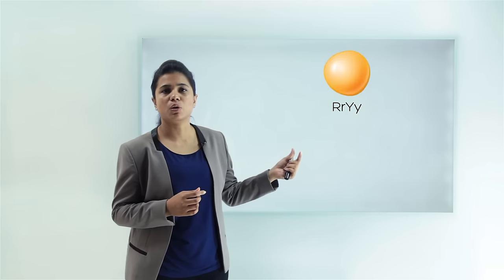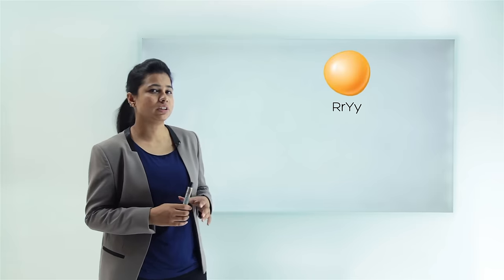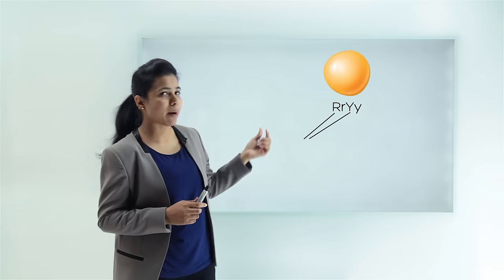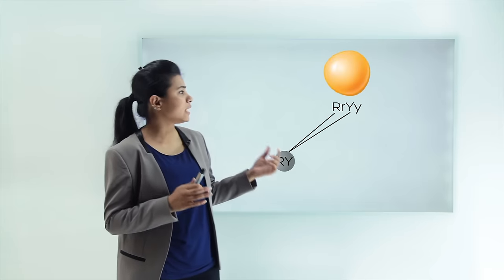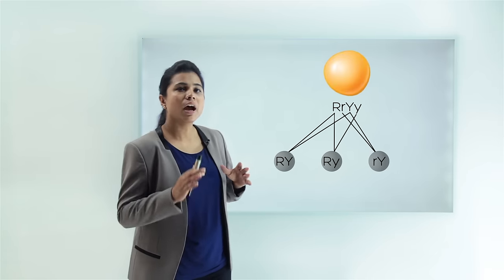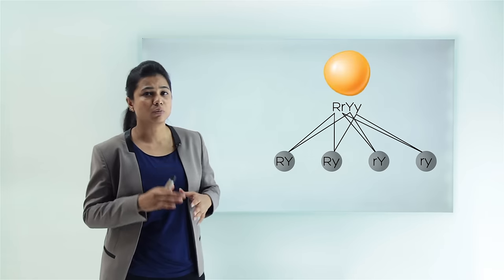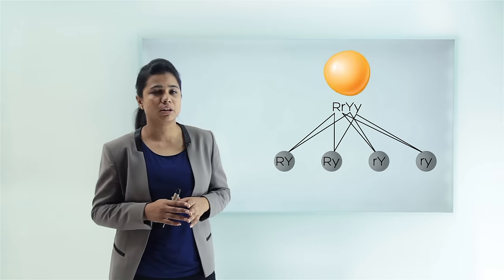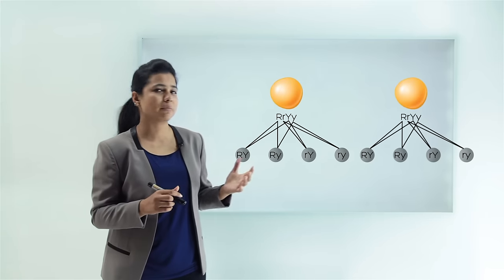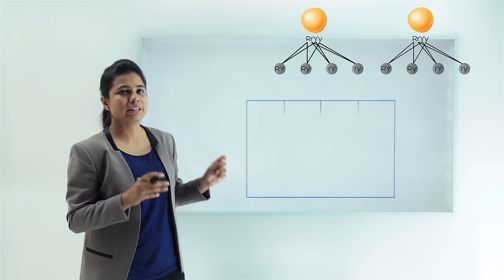Let's use the Punnett square to understand how Mendel got this ratio. We know the genotype of the F1 progenies is capital R, small r, capital Y, small y (RrYy). The gametes formed will each have one gene for the color trait and one gene for the shape trait. So four gametes are possible: capital R capital Y (RY), capital R small y (Ry), small r capital Y (rY), and small r small y (ry). The same four gametes are formed by both parents.